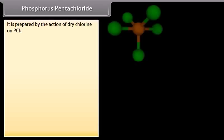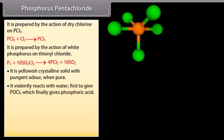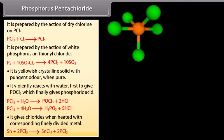Phosphorus pentachloride (PCl5): It is a yellowish crystalline solid with a pungent odour when pure. It violently reacts with water, first giving POCl3, which finally gives phosphoric acid. It gives chlorides when heated with corresponding finely divided metals.